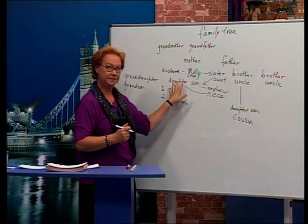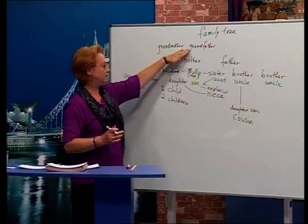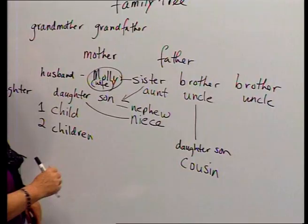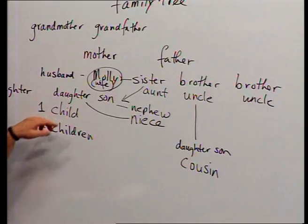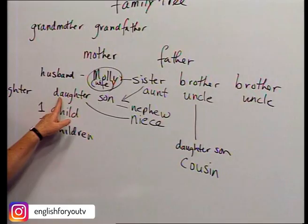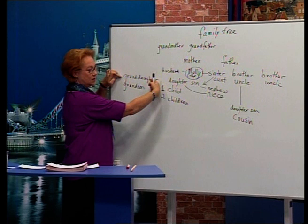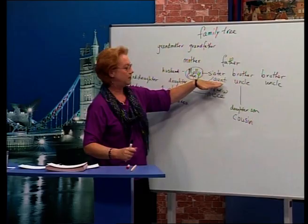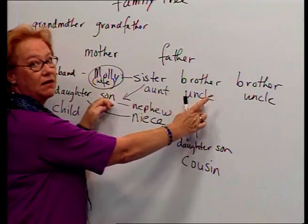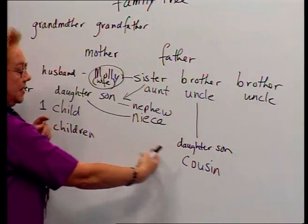Grandmother, grandfather. Mother, father. Husband, wife — husband and wife. Daughter, son. One child, two children. Granddaughter, grandson. The aunt of the daughter and son. Aunt, uncle. Nephew, niece. And cousins. This is my family tree.